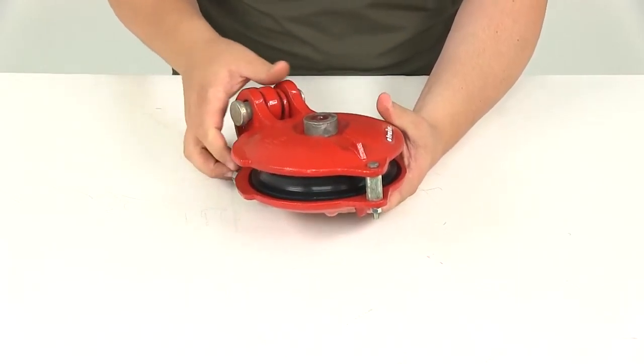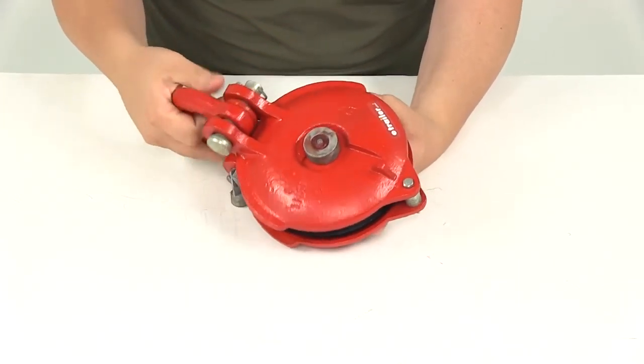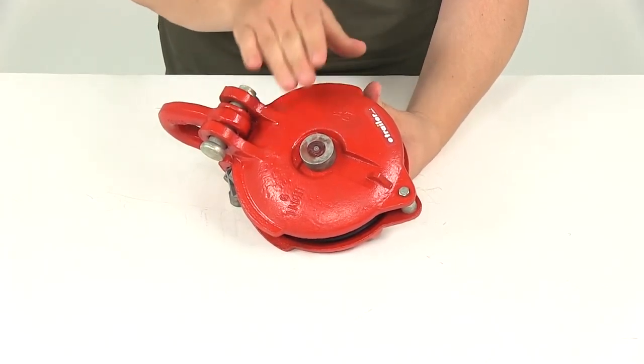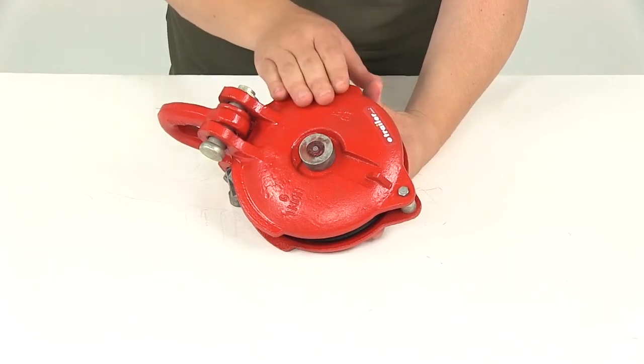But it's also going to feature a grease fitting here on this side. That way you can easily maintenance the pulley block so you can get in there and grease the axle whenever needed.